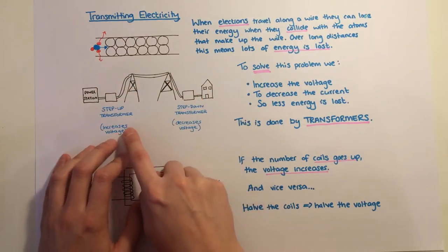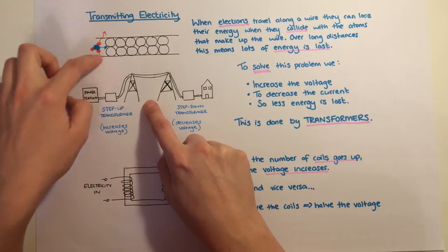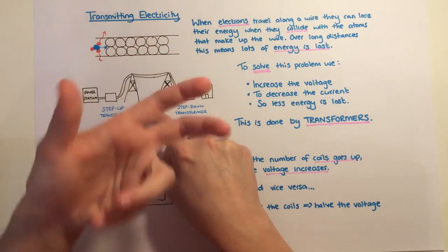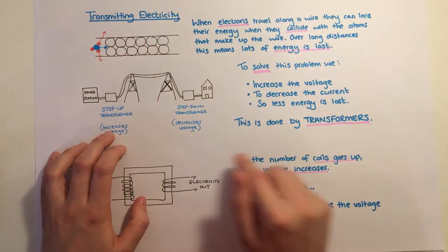To solve this problem, we increase the voltage, we give each electron more energy, but we send less electrons along. So if there's less electrons going along, there's less collisions and we lose less energy overall.